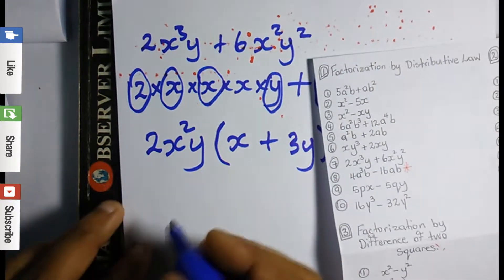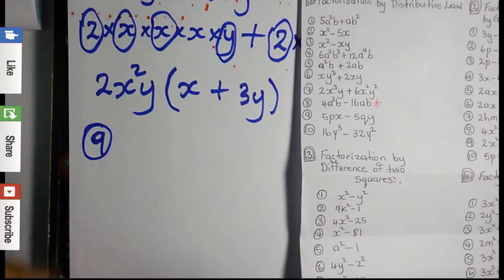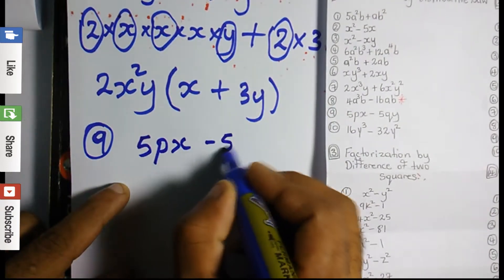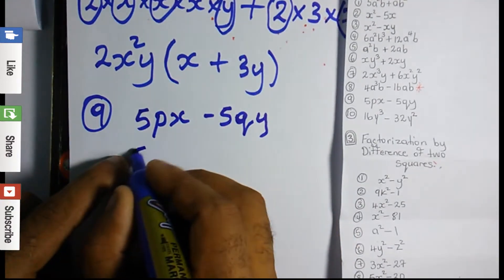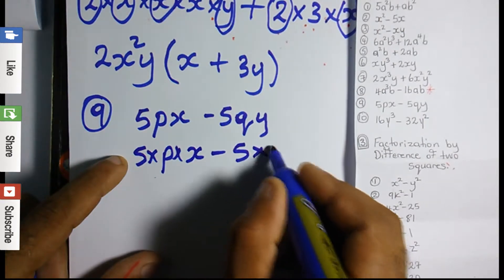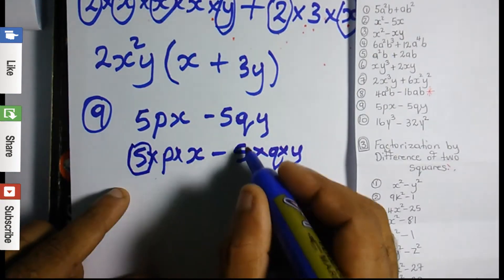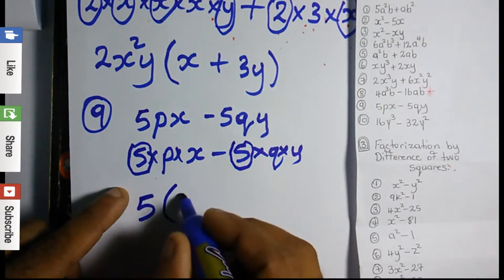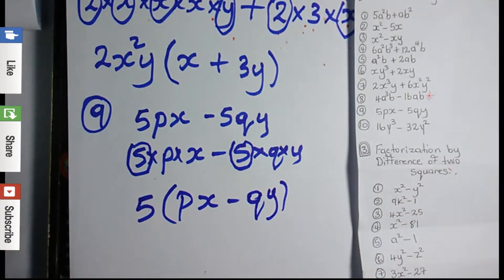Question 9: we have 5px - 5qy. Expanding: 5 times p times x, minus 5 times q times y. Looking at both sides, only the 5 is common. So: 5 open bracket, what's left is px minus qy. The answer is 5(px - qy).